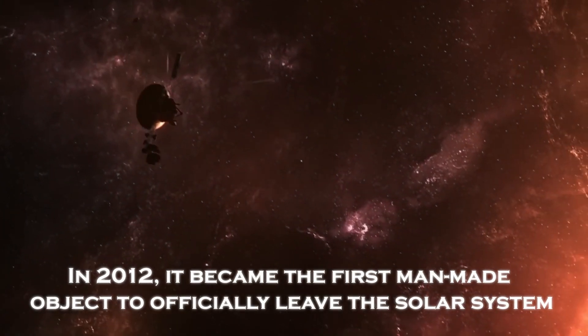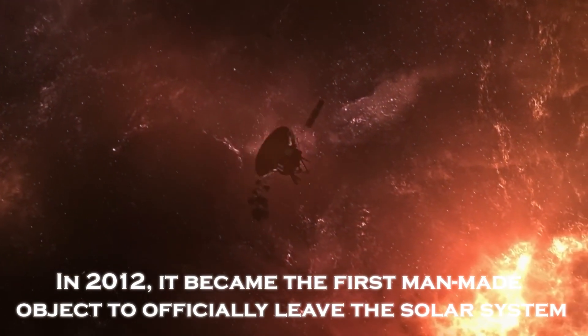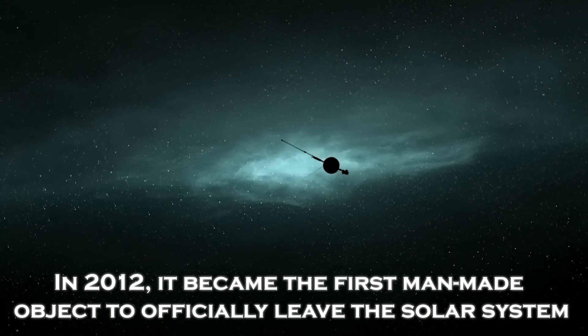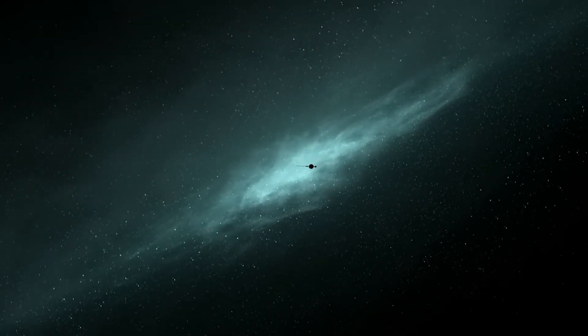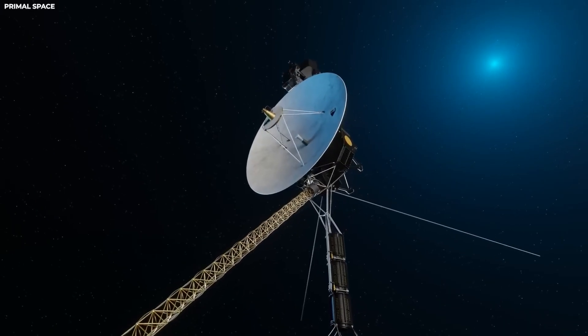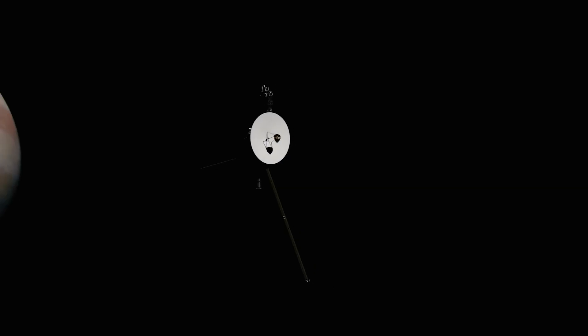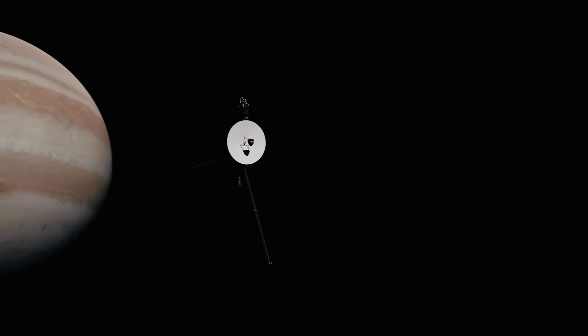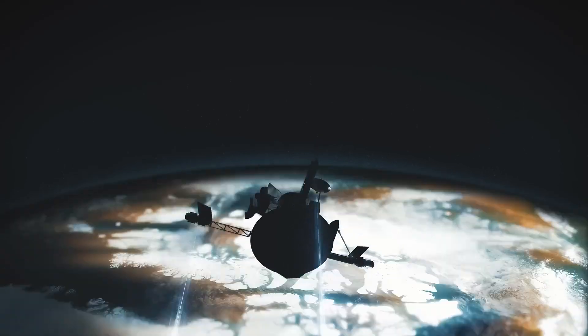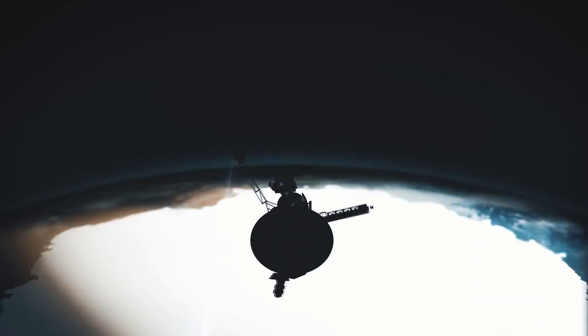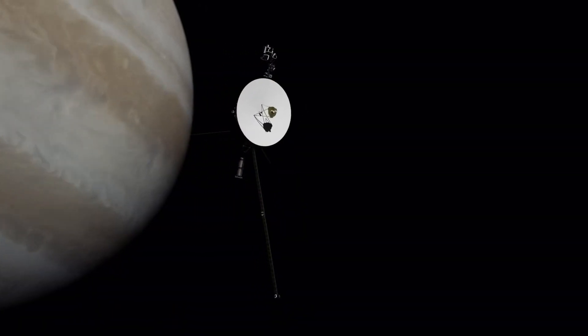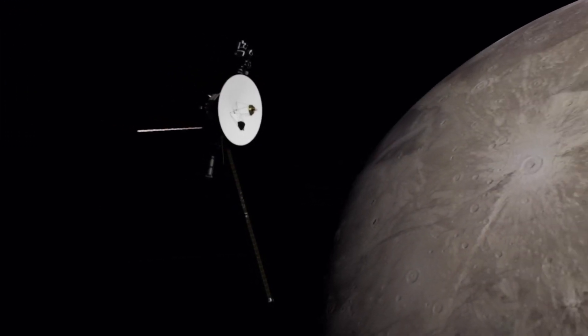In 2012, it became the first man-made object to officially leave the solar system, crossing the Heliopause and entering interstellar space. But now, more than 47 years after its launch, Voyager 1 has surprised us again. It has detected something at the edge of our solar system, something scientists never imagined.